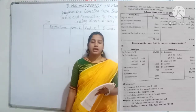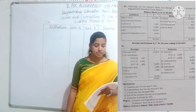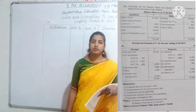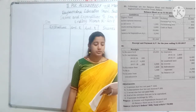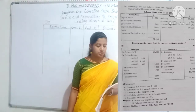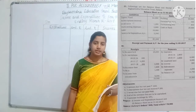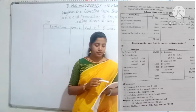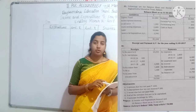Next, the receipts and payment account, debit side. First entry on the receipt side is balance brought down Rs. 20,000, which comes from the balance sheet entry. Next, subscription entry: for 2015-16, Rs. 2,400 as per the balance sheet.